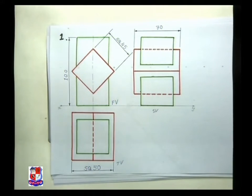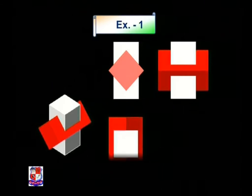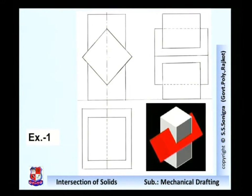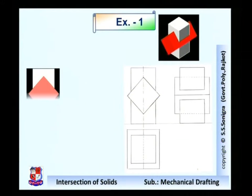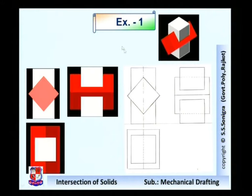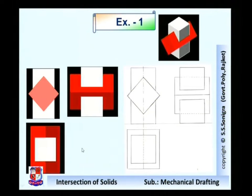That is problem number one — we have seen three views. Now compare these three views; this is the final answer. You can compare these three views in the isometric view. This front view is to be compared with this one. Similarly, this side view can be compared with this side view — this is the drawn view and this is the actual view. Similarly, this is the top view and this is the top view. That is problem number one.